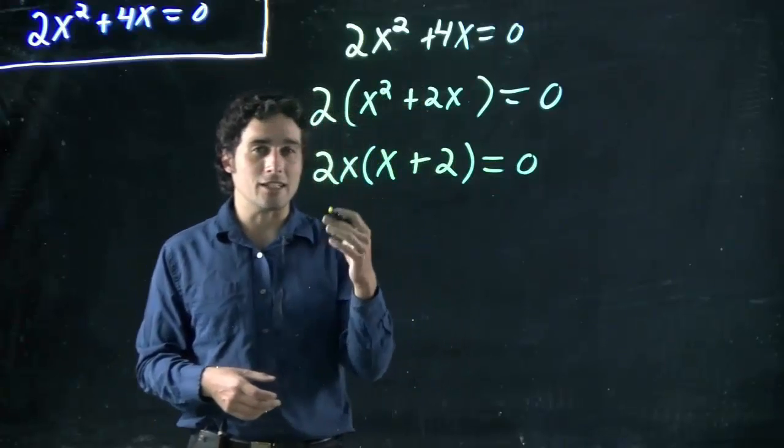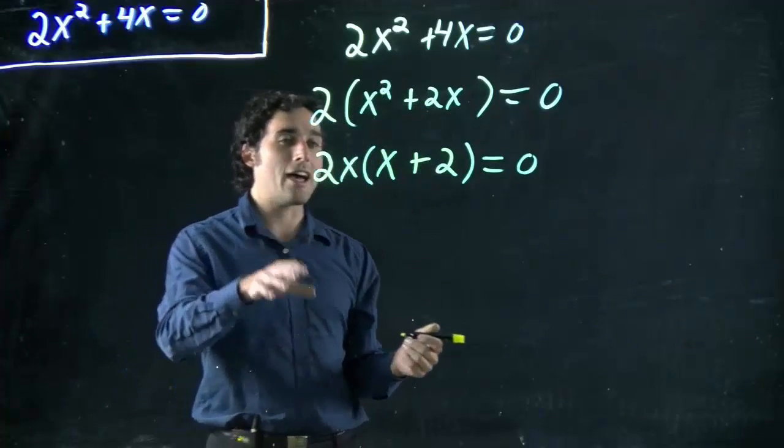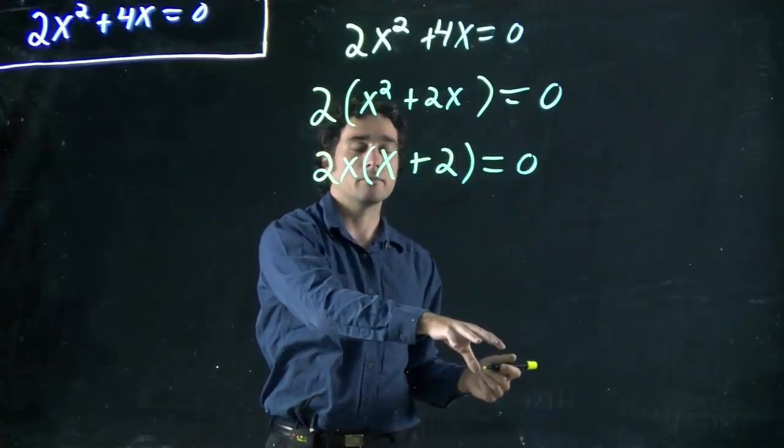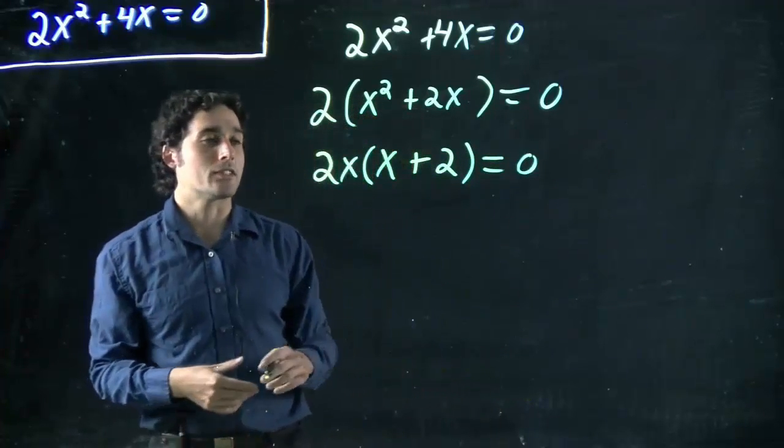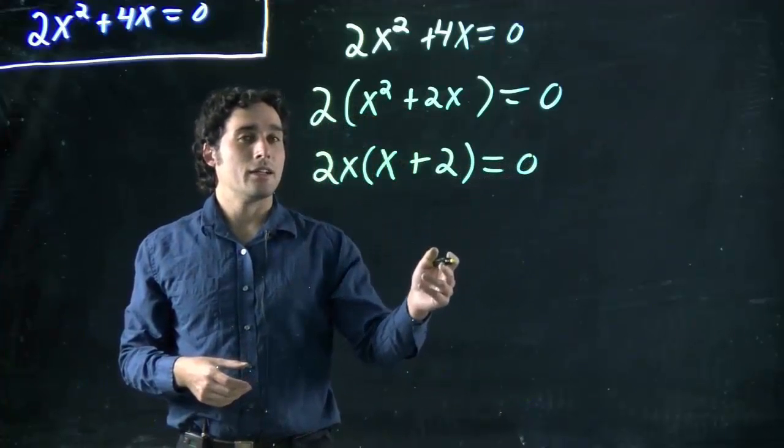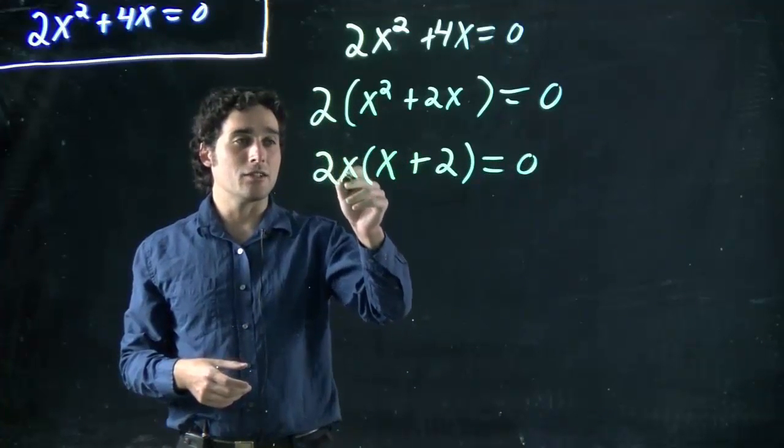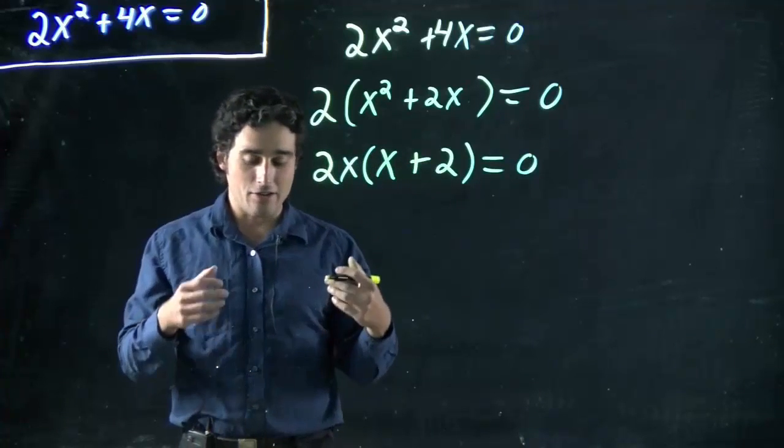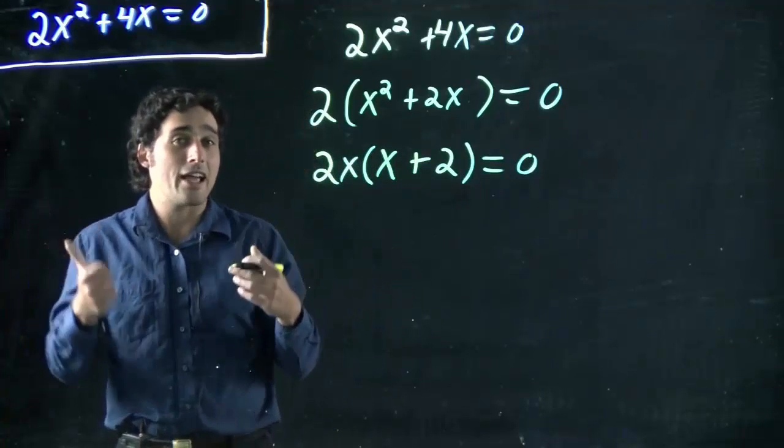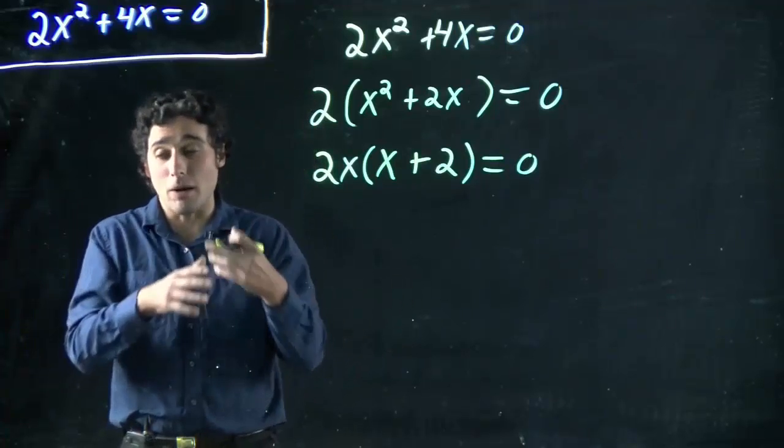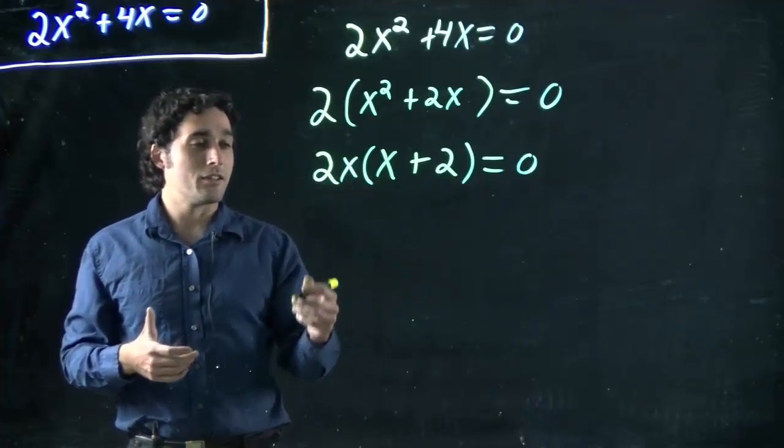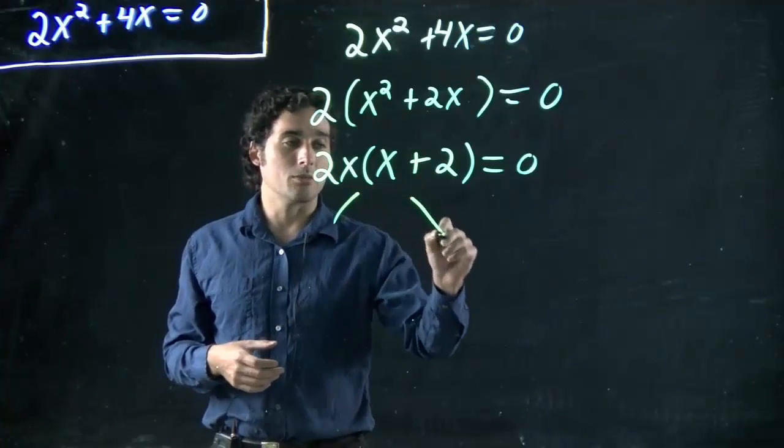And now this lets me actually solve for x. Because what I have is something times something equaling 0. Well, let's think about that for a second. If this is 0, that means either this has to be 0 or this has to be 0, or both. So if I had a times b equals 0, either a has to be 0 or b has to be 0, or possibly both.